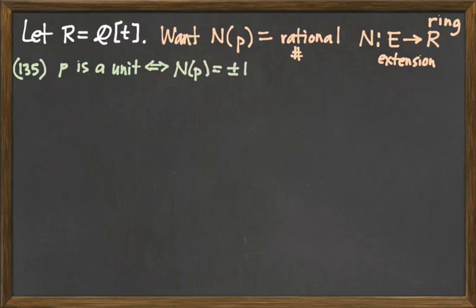But remind me again, what were the units in the polynomial ring whose coefficients were rational? So the first thing that we know that we want is we want a function, a norm function, which assigns the number 1 to every constant polynomial.